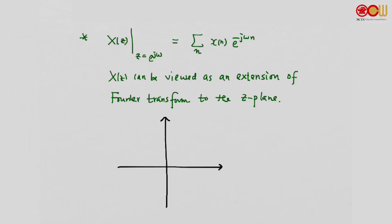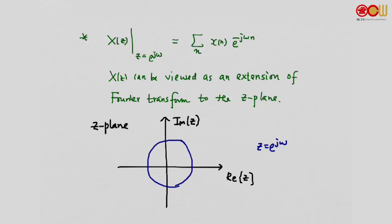On the complex Z-plane, we have the real part and the imaginary part of z. If we look at only the part where z equals e to the j omega, that is a circle — a unit circle with radius 1. If we look at the value of the Z-Transform only on this circle, then X(e to the j omega) is exactly the Fourier transform.